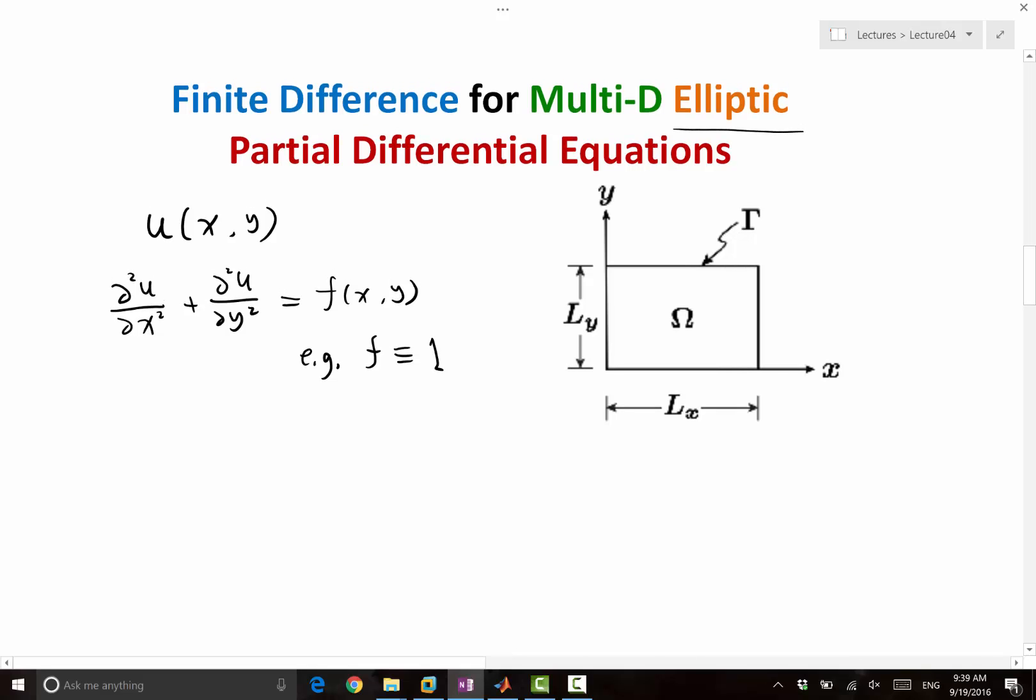So boundary conditions is a very, very complicated consideration. In this case, let's first consider the simplest type of boundary conditions. Let's say u is equal to 0 at x, y in the boundary. That's gamma. So gamma denotes the boundary of the domain.